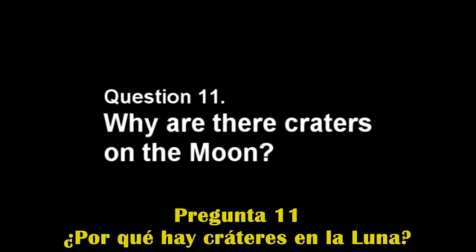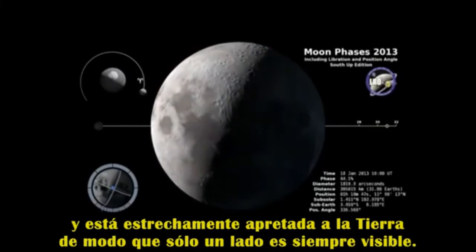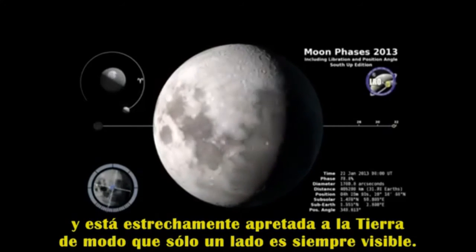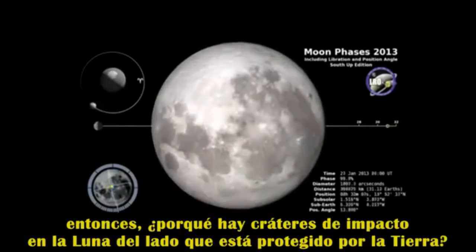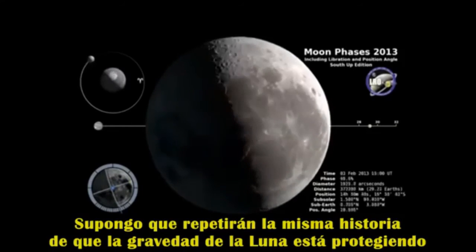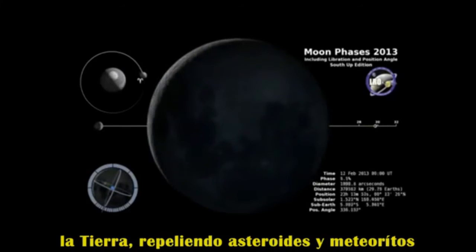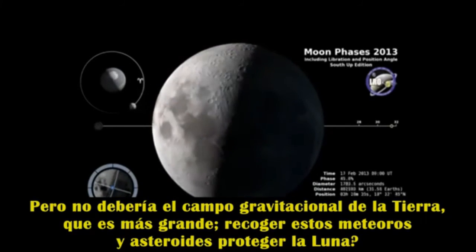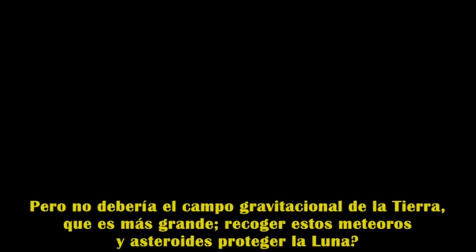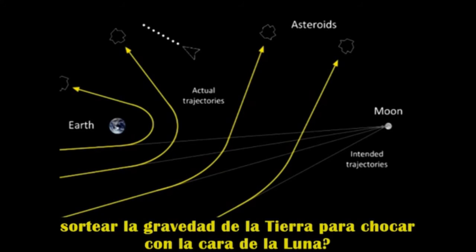Question 11. Why are there craters on the Moon? If the Moon used to be much closer to the Earth, slowly moving away from us, and is tidally locked to the Earth so that only one side is ever visible, then why are there impact craters on the one side of the Moon that is protected by the Earth? I am guessing you will repeat the story that the Moon's gravity has been protecting the Earth by hoovering up meteors and asteroids. But shouldn't the Earth's much larger gravitational field have been gathering up these meteors and asteroids and protecting the Moon? So how are comets, meteors and asteroids able to pass through or avoid the Earth's gravity to hit the face of the Moon that's shielded by the Earth?